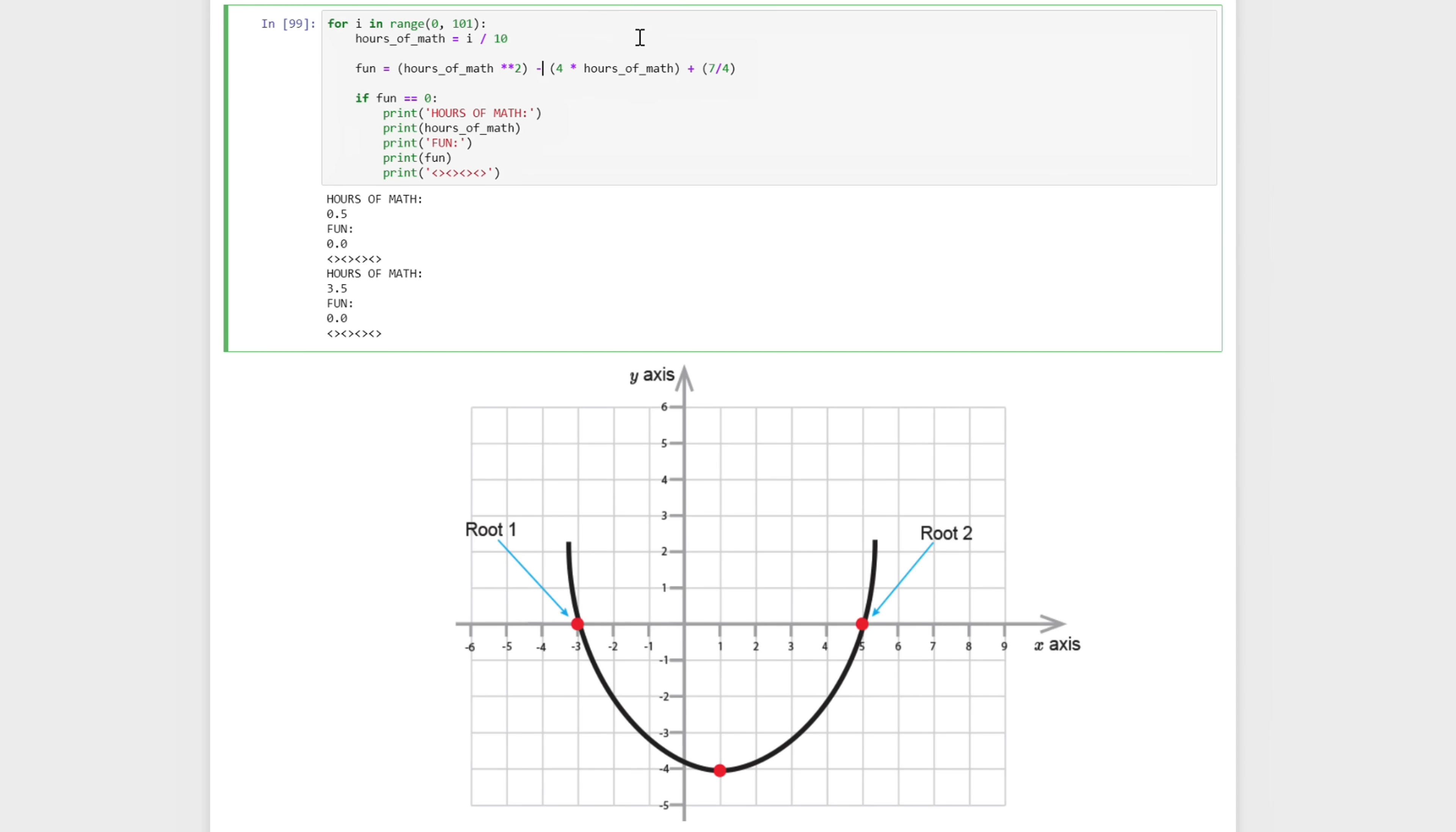There's a couple of caveats to this. There's two areas where we need to make sure that what we're doing is making sense. The first area is the range that we're checking. So here, I am checking between 0 and 100, and then dividing it by 10.